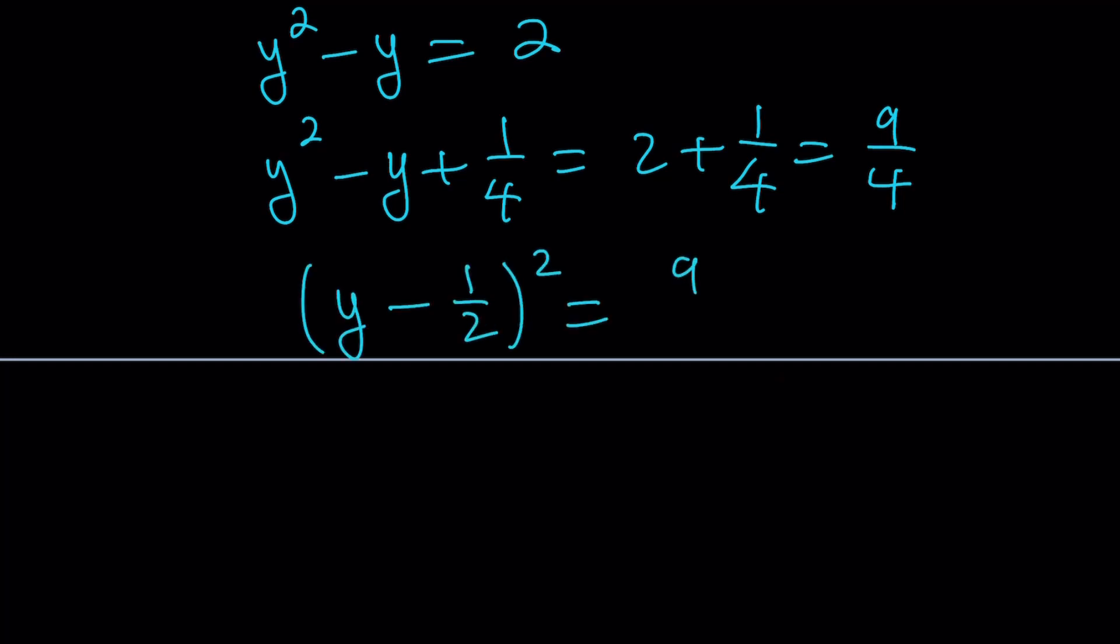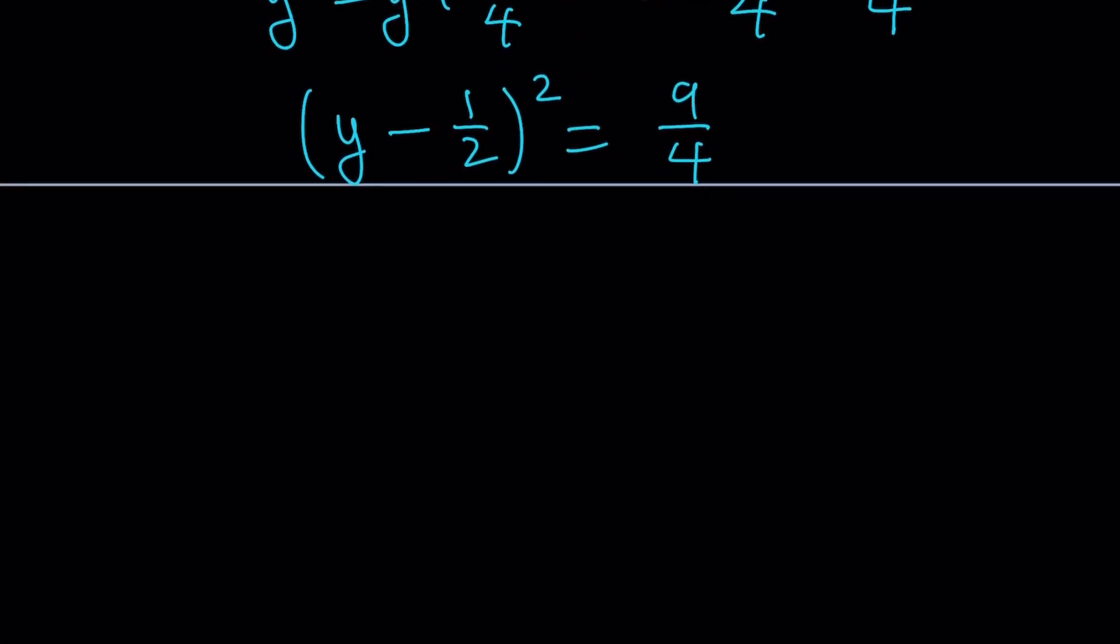The left-hand side now becomes y minus 1 half squared. And now we can basically take square roots and find both solutions. In one case, y minus 1 half is square root of 9 fourths, which is the positive square root. That's going to be 3 halves. Or we can write the right-hand side as negative 3 halves. Because there are two numbers whose square equals 9 fourths. So don't get me wrong. I'm not saying the square root of 9 fourths can be plus minus 3 halves, but more like there are two numbers whose square equals 9 fourths, and those are 3 halves and negative 3 halves.